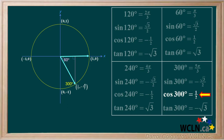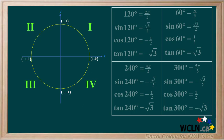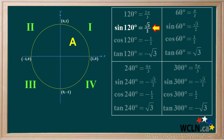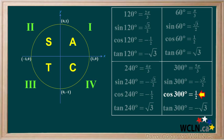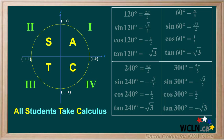We'll label the 4 quadrants as 1, 2, 3, and 4, starting with 1 and moving counter-clockwise. In quadrant 1, all of the values are positive, so we'll write A for all. In quadrant 2, only the sine is positive, so we'll write S for sine. In quadrant 3, only the tangent is positive, so we'll write T for tangent. In quadrant 4, only the cosine is positive, so we'll write C for cosine. We can remember these using the sentence: all students take calculus.